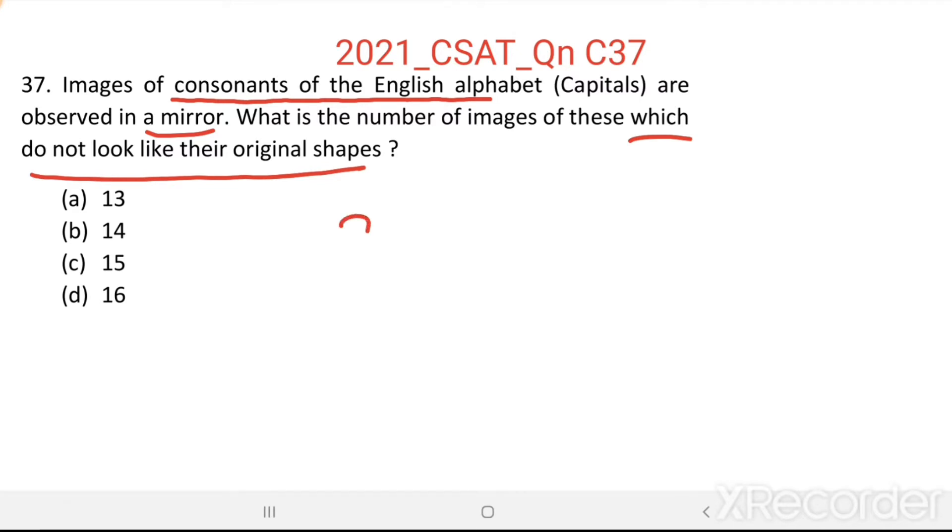There are 26 letters in the English alphabet out of which five are A, E, I, O, U. These five are vowels and the remaining twenty-one are consonants.